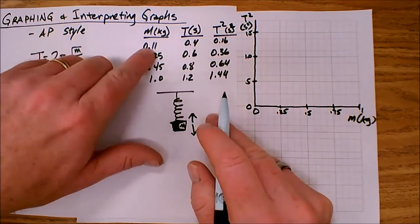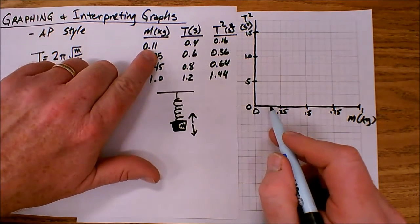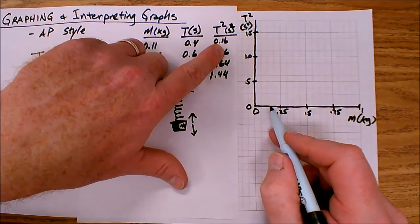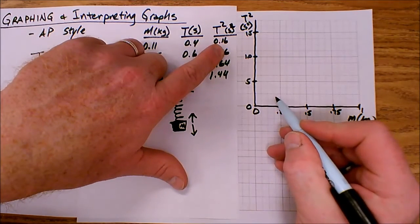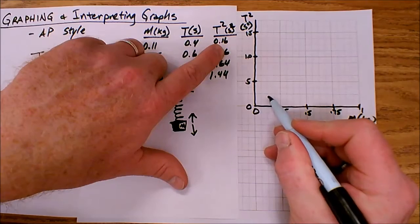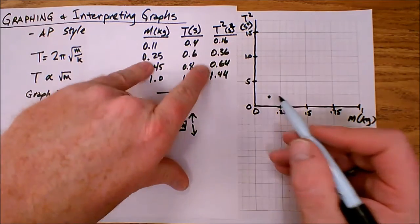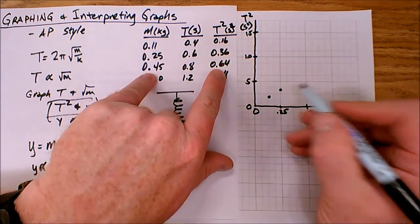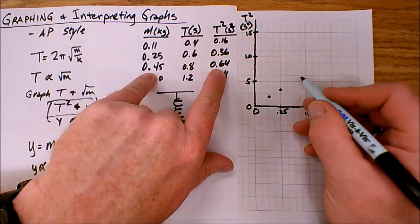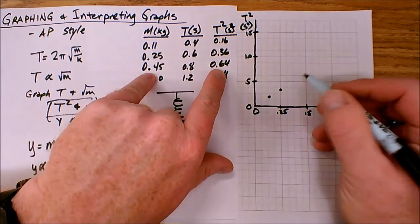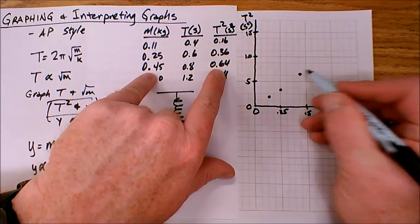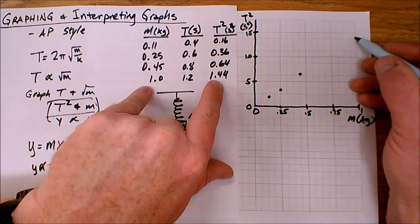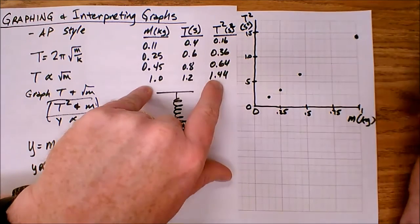Now I'm ready to plot some points. So to plot the points, I simply go on the mass to 0.11, it's about here. And then I go up on the T squared to 0.16, and that is going to be about here. Then 0.25, 0.36. 0.45, 0.64, 1.0 and 1.44, and something like that.